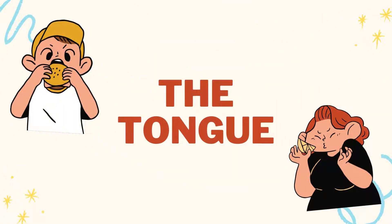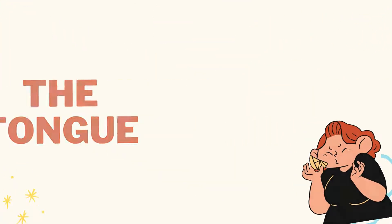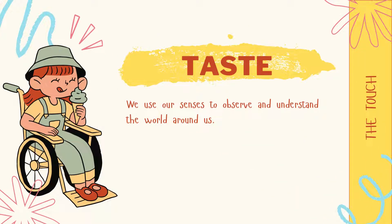The next organ is the nose and the tongue. We can use these taste senses to observe and understand the world around us too. Like you can taste ice cream — is it delicious, is it sweet, is it bitter, or even is it sour.